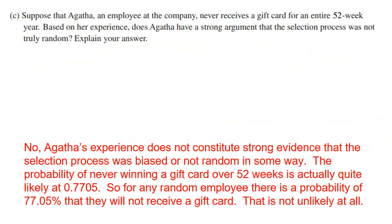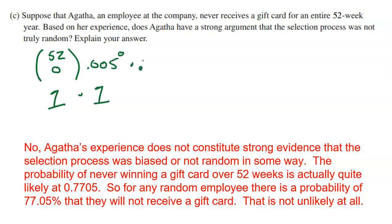Part C: Suppose Agatha, an employee, never receives a gift card for the entire 52-week year. Based on her experience, does she have a strong argument that the selection process was not truly random? To assess that, we find the probability of what happened to her. We already calculated it: P(X = 0) = 52 choose 0 × 0.005^0 × 0.995^52 = 0.7705.